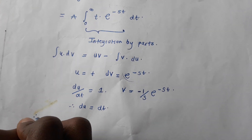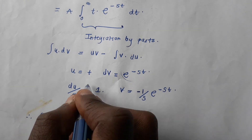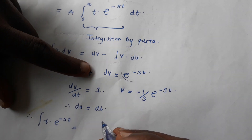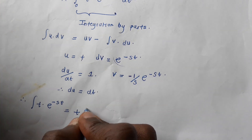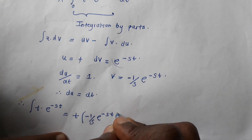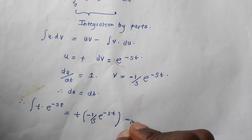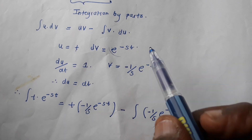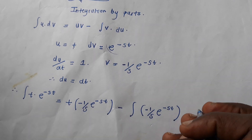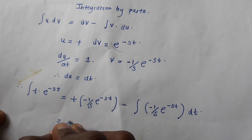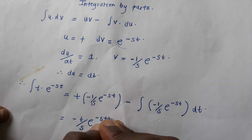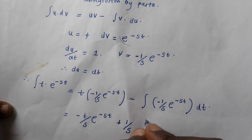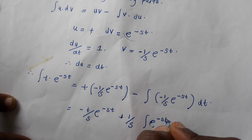Therefore, the integral of u dv — so the integral of u, which is t, times dv, which is e^(−st) — equals uv minus the integral of v du. So we have u as t, and v as minus 1 over s times e^(−st), giving uv = minus t over s times e^(−st). Then minus the integral of v du, which is minus 1 over s times e^(−st) dt. We take 1 over s outside, and the two negatives make a positive, giving plus 1 over s times the integral of e^(−st) dt.